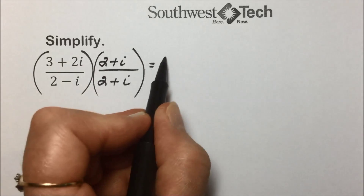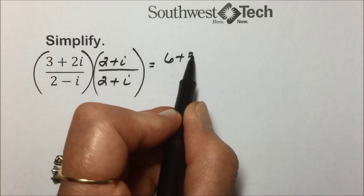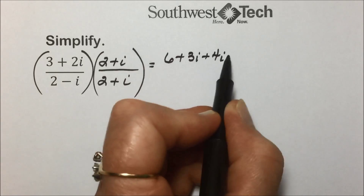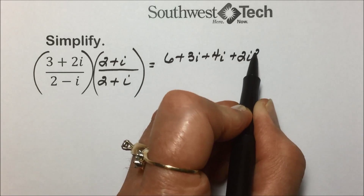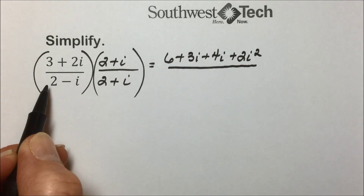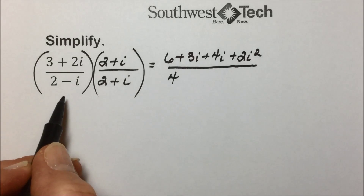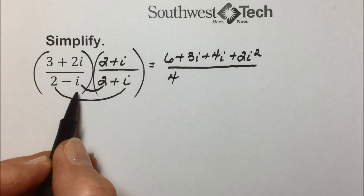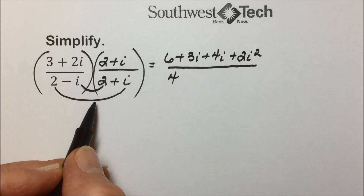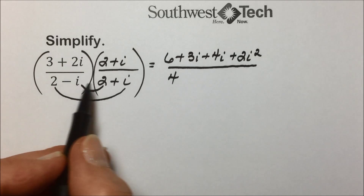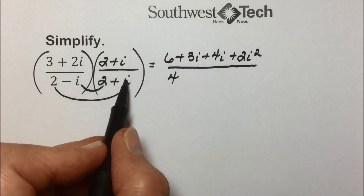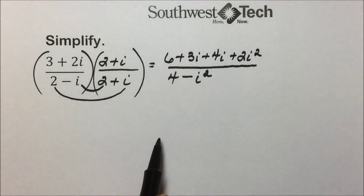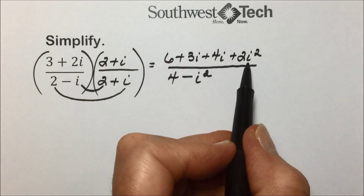In the numerator, to simplify, we have a binomial times a binomial. We'll multiply first terms together to give us 6. Outside terms give us 3i. Inside terms multiplied together give us 2i times i, or i squared. In the denominator, foiling as well: first terms multiplied together is 4. Outside terms give us a positive 2i. Inside gives us a negative 2i. Those terms are opposite and cancel out by design because of our conjugates. We also have to multiply our last terms together: a negative times a positive is a negative, and i times i is i squared.